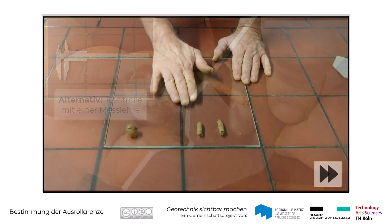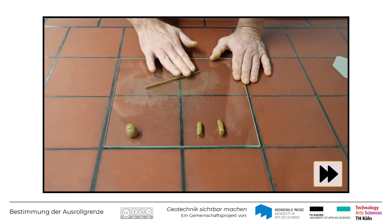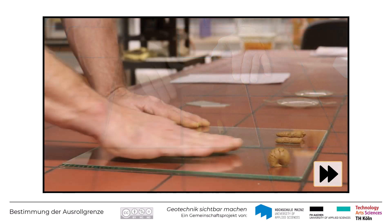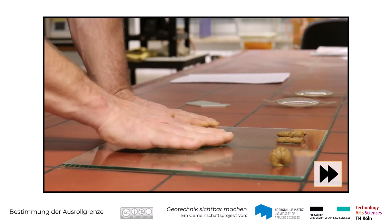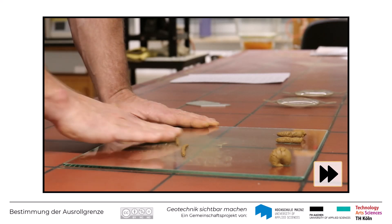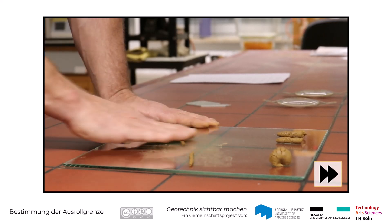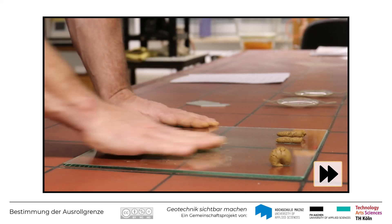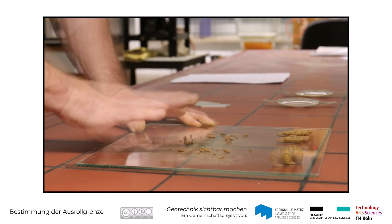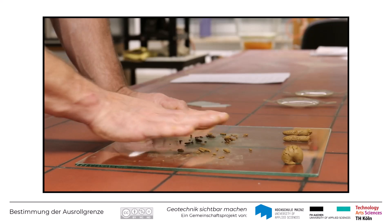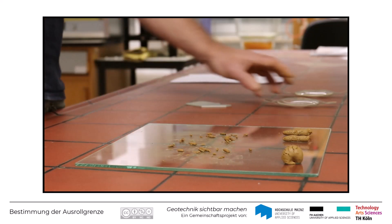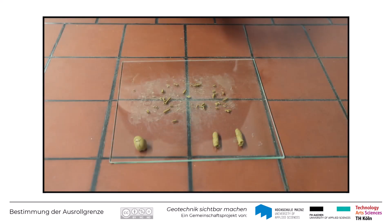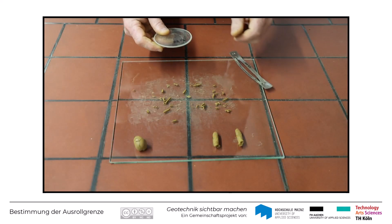Anschließend wird die Probe wieder zusammengeknetet und der Ausrollvorgang erneut durchgeführt – und zwar so lange, bis die Bodenprobe durch den Knete- und Ausrollvorgang so weit ausgetrocknet wurde, dass die entstehenden 3 Millimeter dicken Bodenröllchen gerade beginnen auseinanderzubrechen. Sofort anschließend werden die zerbröckelten Röllchen in einen geeigneten Behälter, z.B. ein Urglas-Schälchen, gegeben und luftdicht verschlossen.